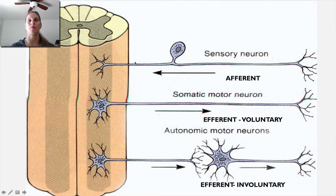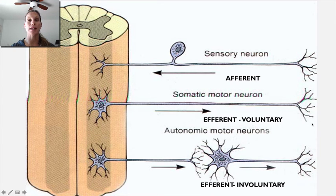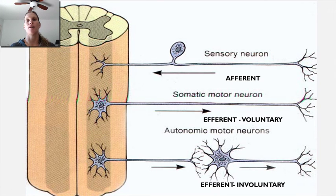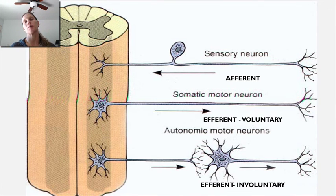To summarize: sensory or afferent neurons travel toward the CNS on one long neuron. The somatic or voluntary efferent signal leaves the CNS and synapses only with skeletal muscle. The autonomic nervous system — whether parasympathetic or sympathetic — has a preganglionic and a postganglionic neuron: the involuntary or autonomic setup. The targets of the autonomic nervous system are smooth muscle of anything hollow, glandular tissue, cardiac muscle tissue, and the conductive tissue of the heart.